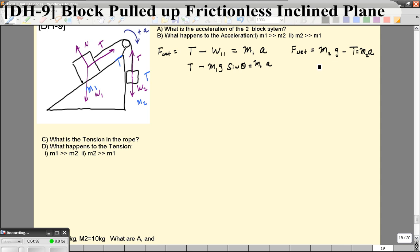So if I solve this for T, the tension is going to be equal to M2 g minus M2 A. As you often want to do, you pick a variable we're going to solve for. I want to solve for the acceleration first. So what I'm going to do is I'm going to take this tension, I'm going to plug it in there. So instead of T, I'm going to write M2 g minus M2 A minus M1 g sine of theta equals M1 A.